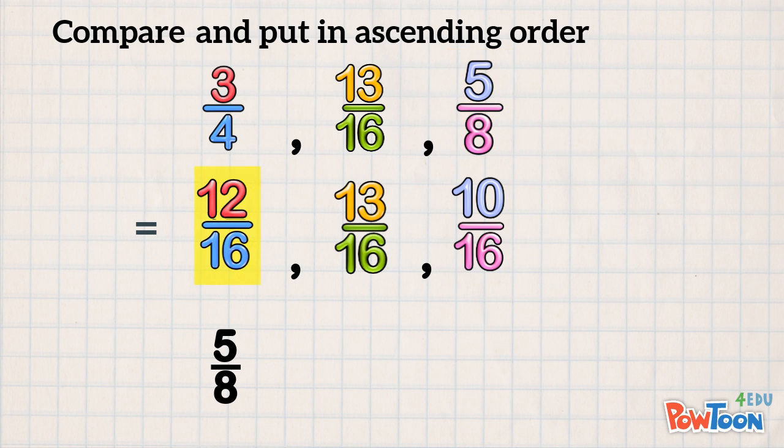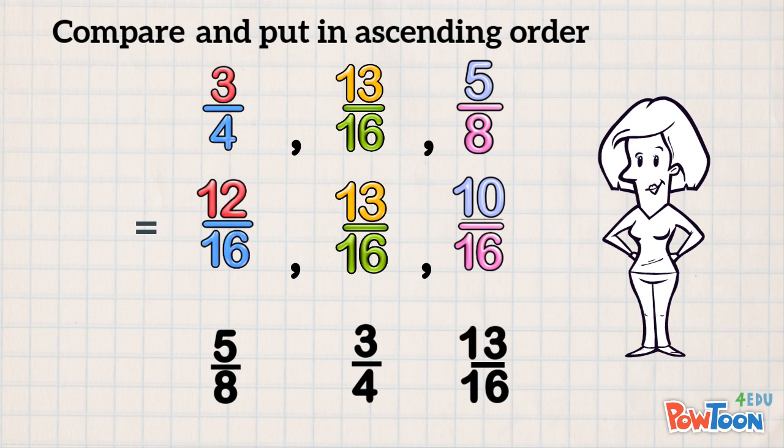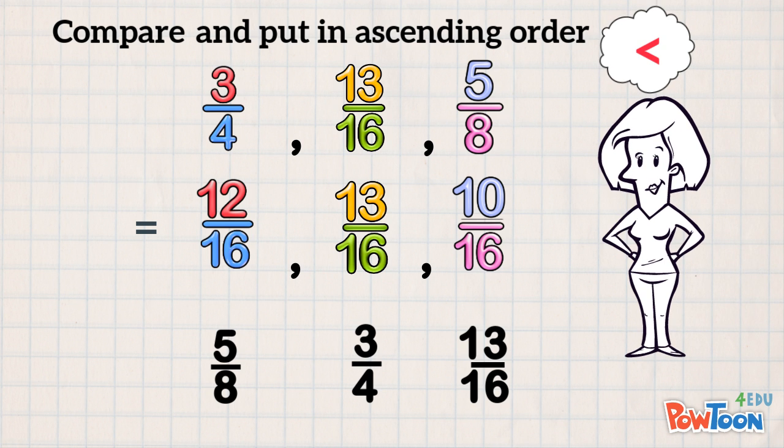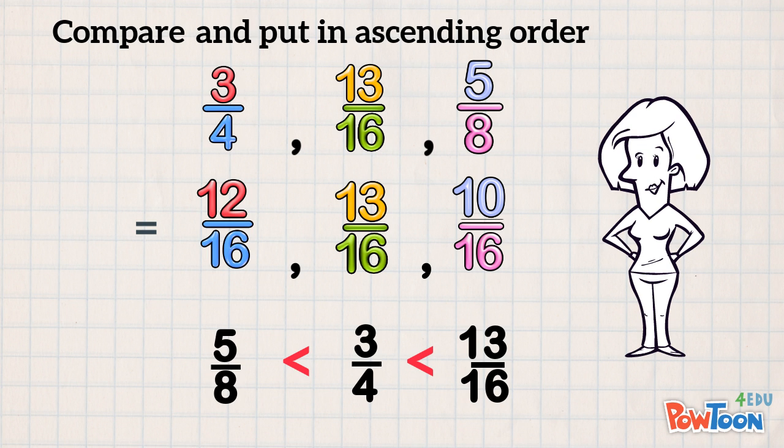Then we have 12 sixteenths. And that's 3 quarters. And then it's 13 sixteenths. We've ordered them from smallest to largest as the question says. So we use the less than sign. 5 eighths is less than 3 quarters which is less than 13 sixteenths. And that's our answer!